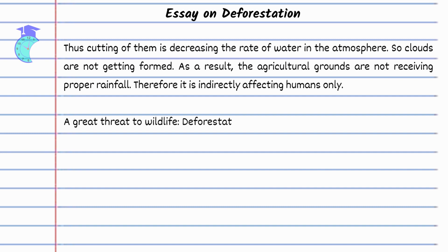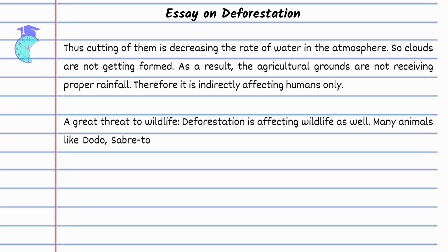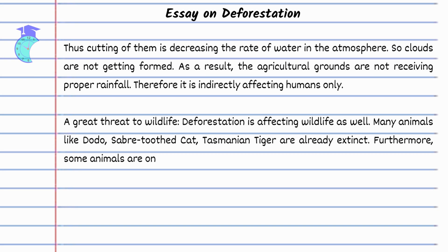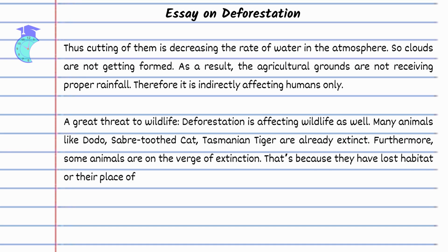A great threat to wildlife — deforestation is affecting wildlife as well. Many animals like the dodo, saber-toothed cat, and Tasmanian tiger are already extinct. Furthermore, some animals are on the verge of extinction because they have lost their habitat or their place of living. This is one of the major issues for wildlife protectors.